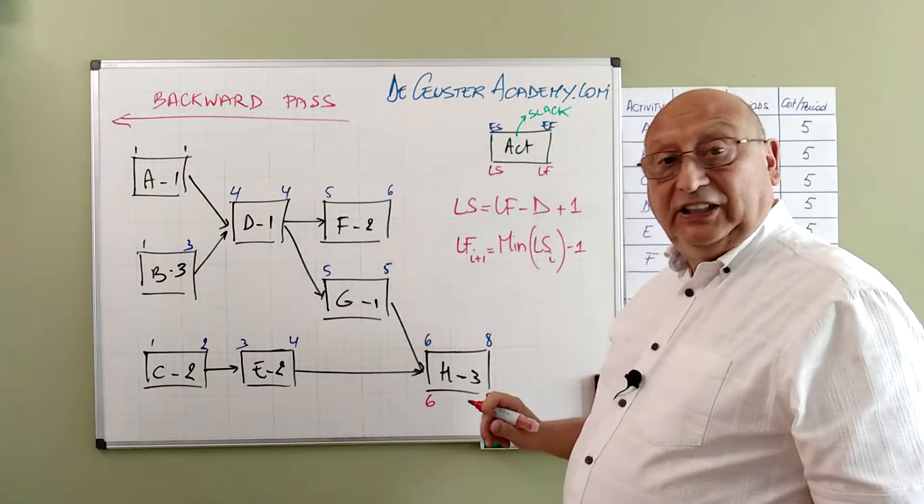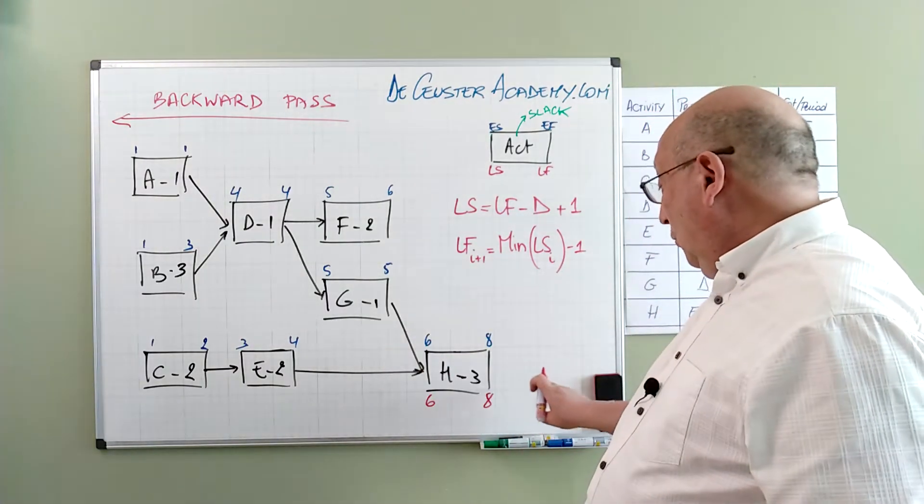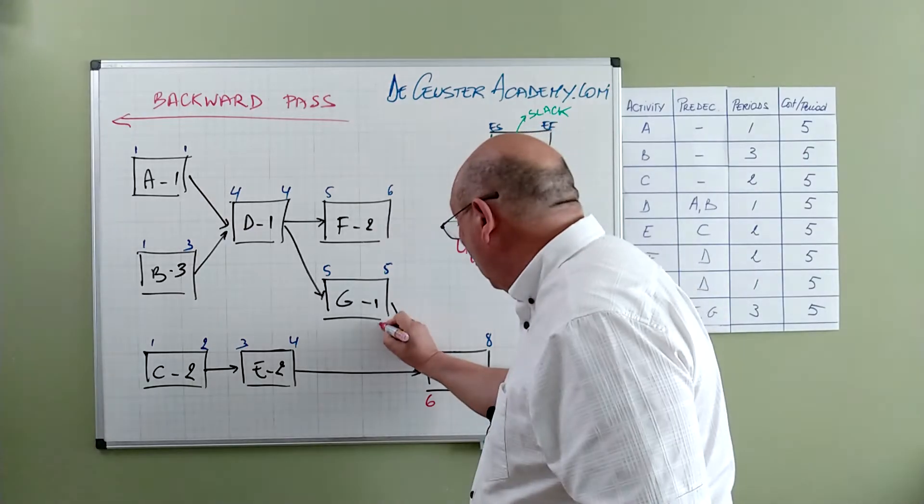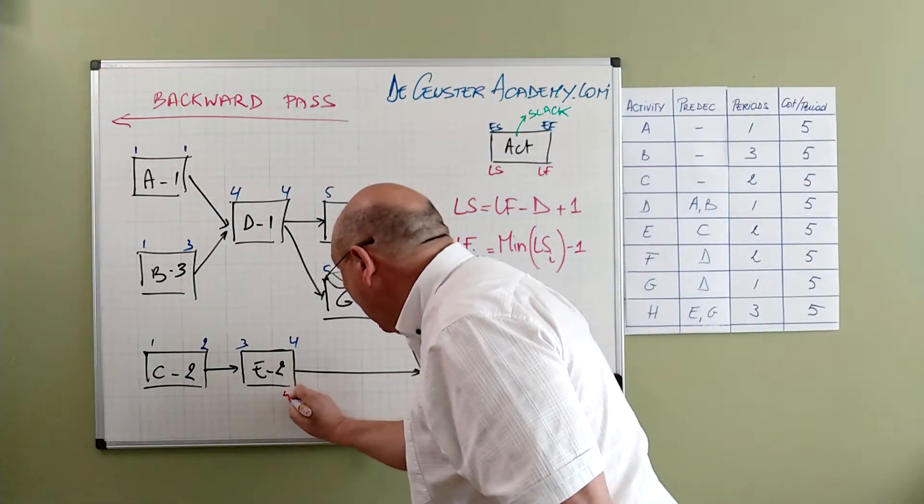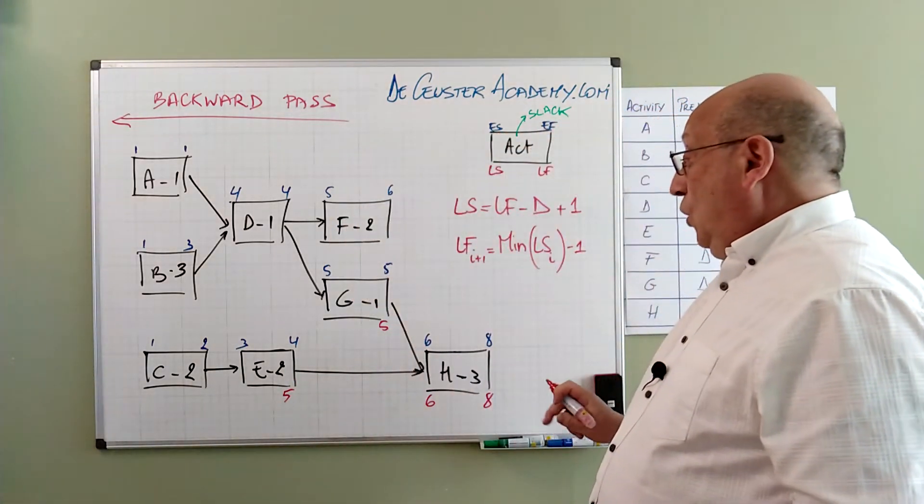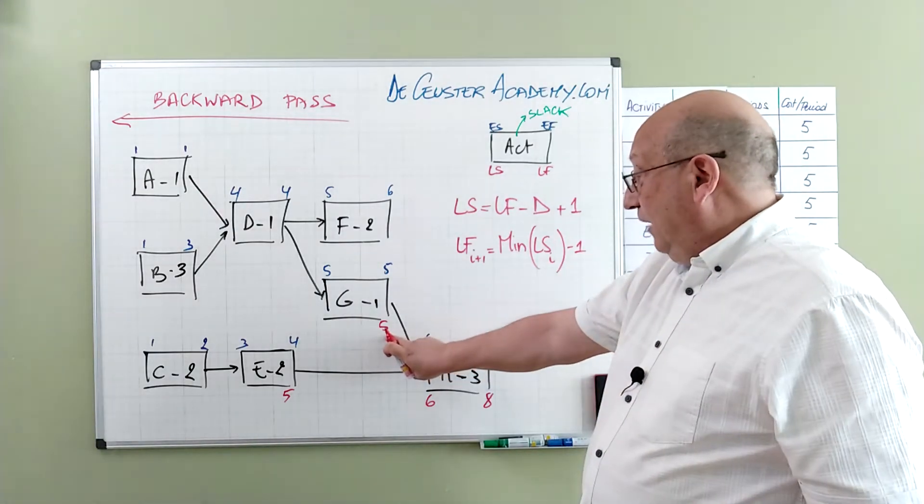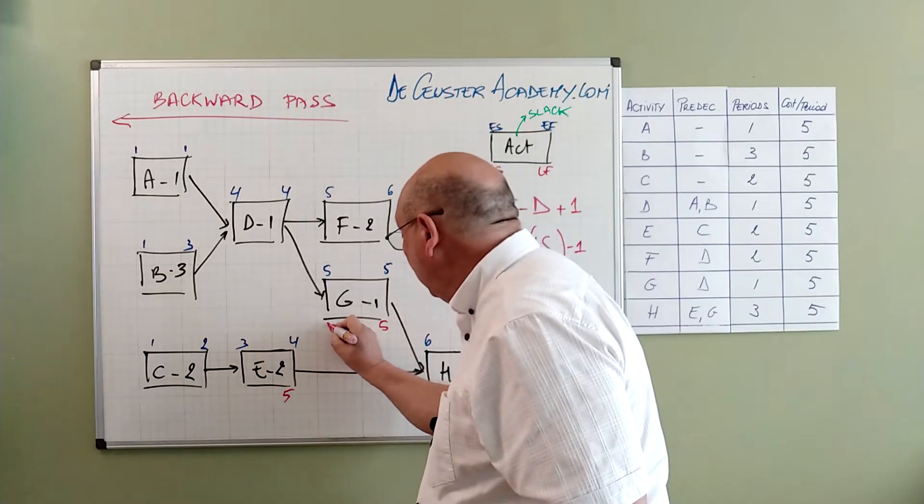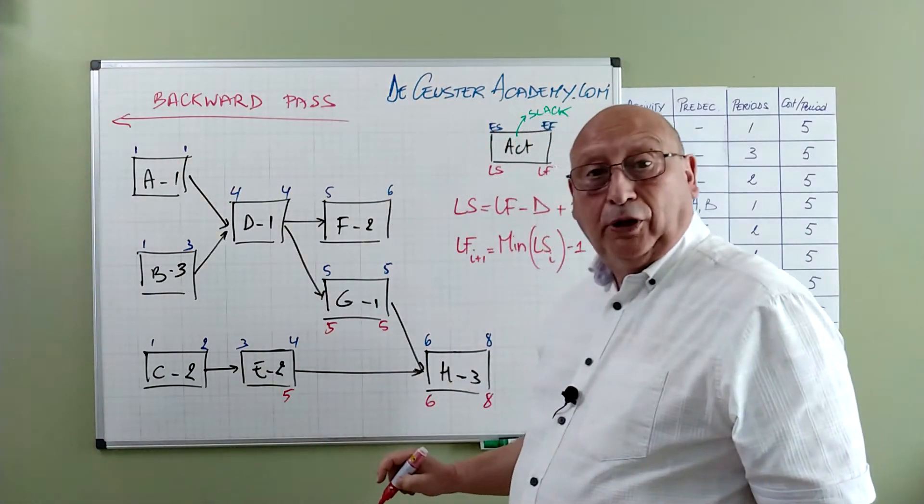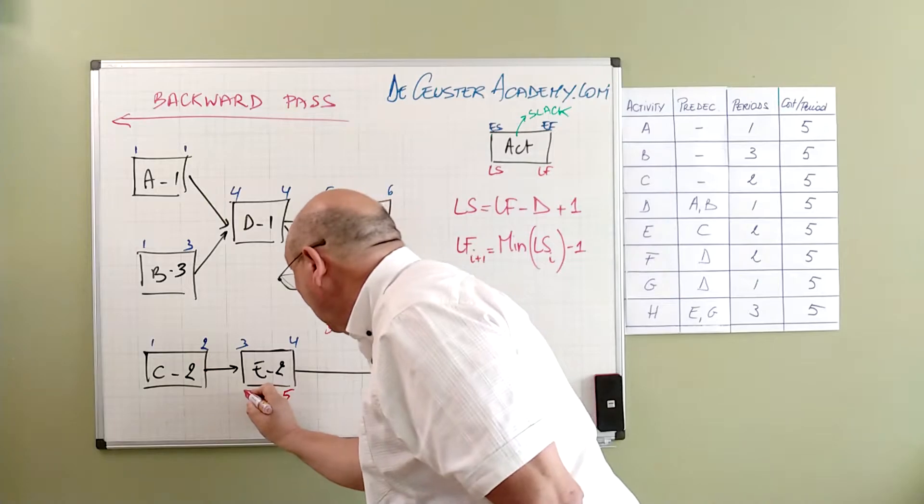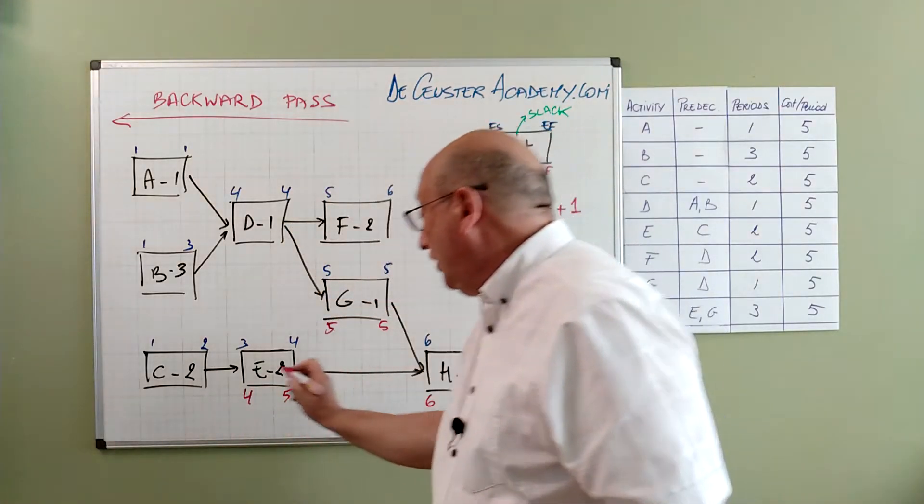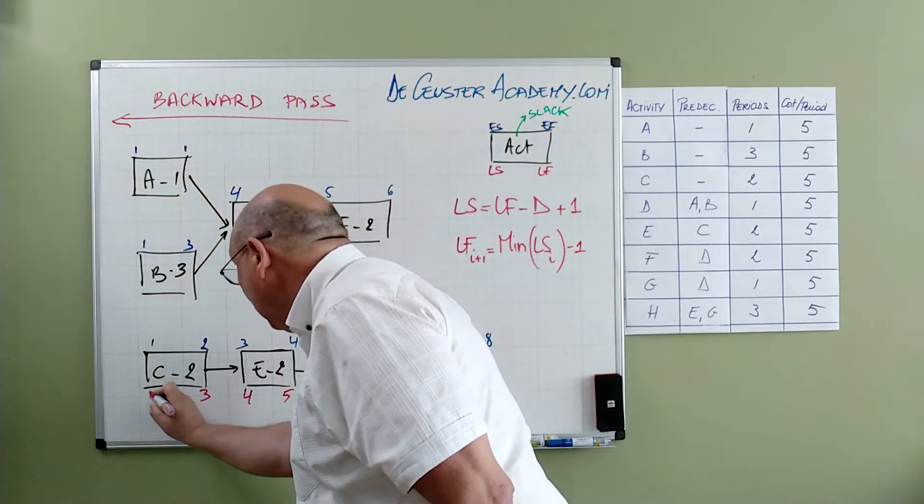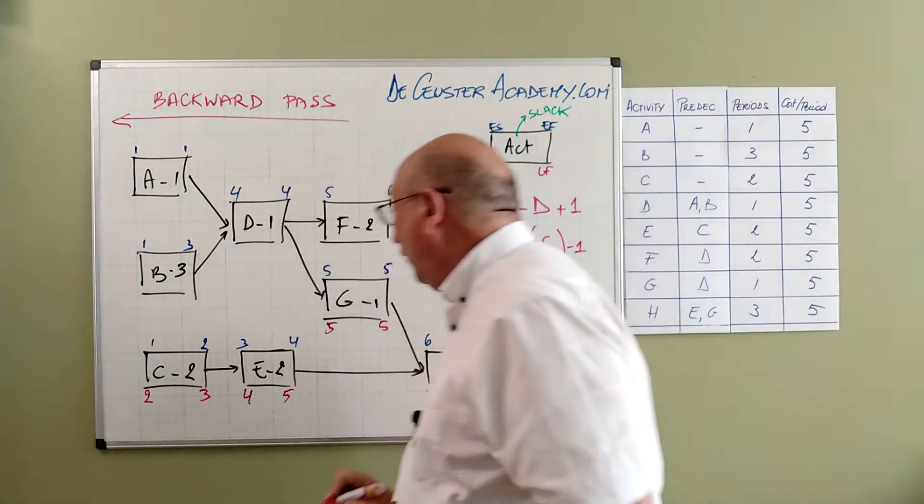Now we can go to activity G and E. We can in fact say this is also 5 and 5. We calculate the formula for G. 5 minus 1 plus 1 is 5. 5 minus 2 plus 1 is 4. So C has a late start of 3 and late finish of 2.